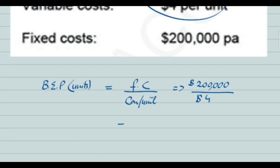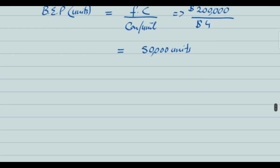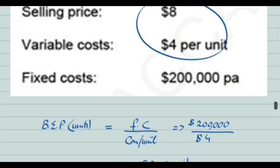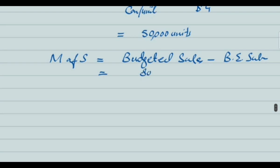So 50,000 units is the break-even point. To calculate margin of safety, the formula is budgeted sales minus break-even sales. Budgeted sales are 80,000 units and break-even point is 50,000 units, so the margin of safety is 30,000 units.